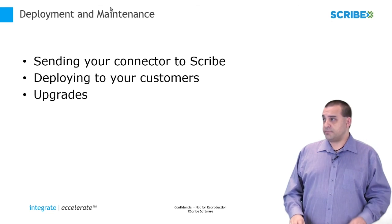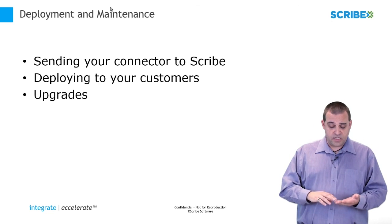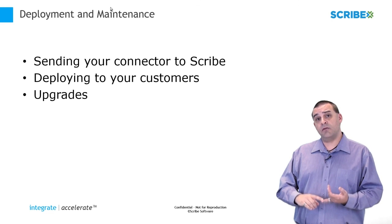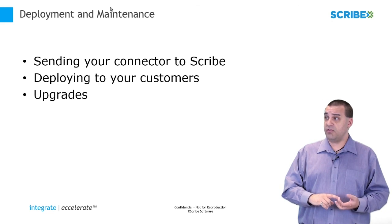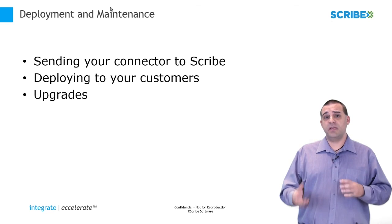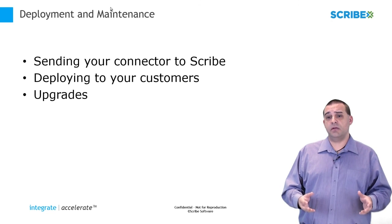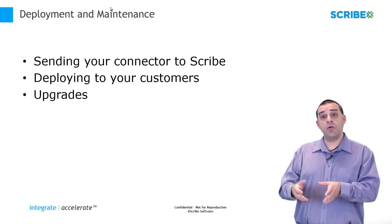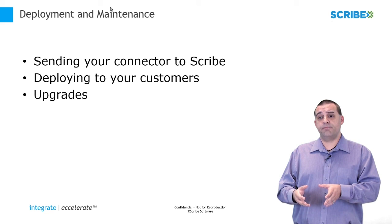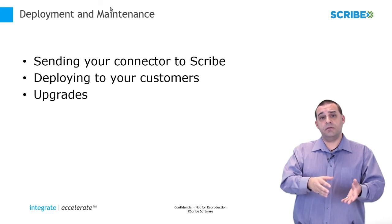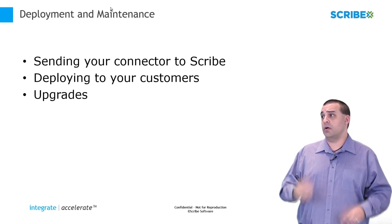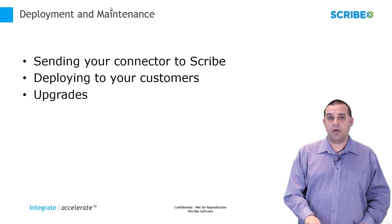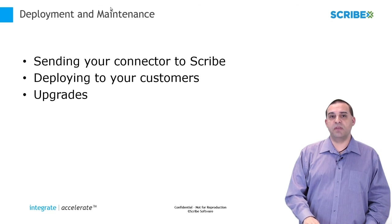For deployment and maintenance, we talked about your connector being deployed in the cloud or on-premise at your customer's site. We'll talk about how you get that code to Scribe for cloud deployment, or how you get the connector code distributed to your customers on an ongoing basis, including upgrades and how we deal with moving that along.